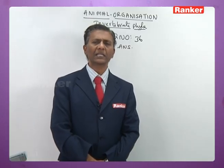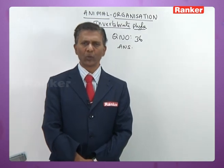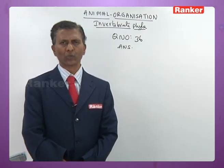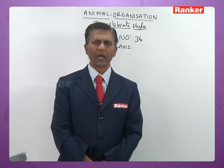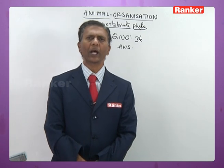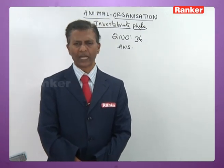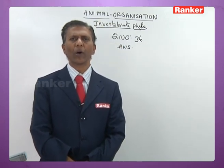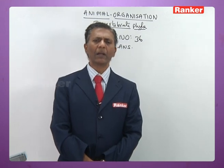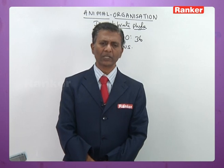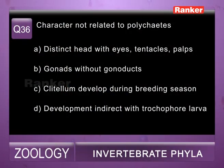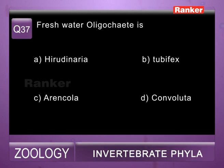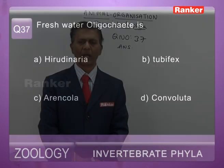Thirty-sixth question: character not related to polychaetes — a) distinct head with eyes, tentacles and palps (correct), b) gonads without gonoducts (correct — only in Oligochaeta are gonads with gonoducts), c) clitellum develops during breeding season (wrong — polychaetes do not have clitellum at all; clitellum appears in leeches during breeding season), d) development indirect with trochophore larva (correct). So thirty-sixth question correct answer is c.